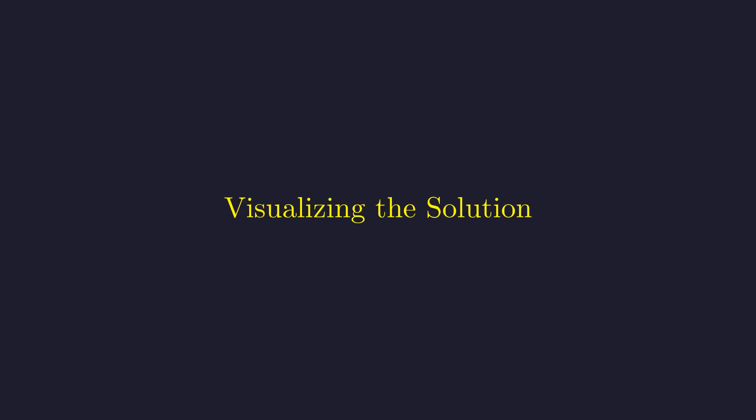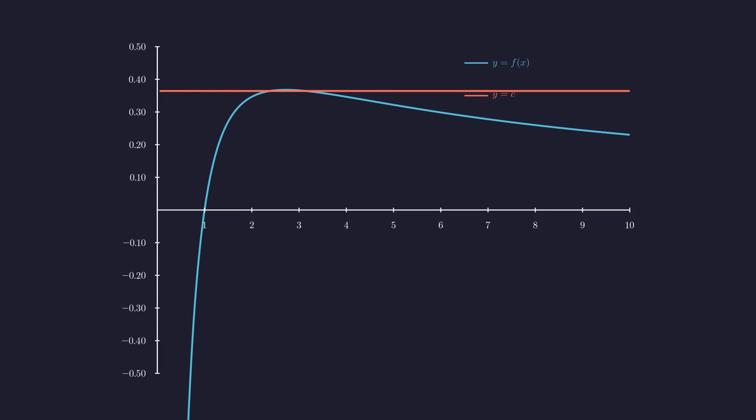Let me show you what this looks like graphically because I think a visual will really drive the point home. Let's plot our function f of x. Here's the blue curve representing f of x, and the red horizontal line representing our constant c. You can see the peak occurs at x equals e, and there are exactly two points where the red line intersects the blue curve. One is our obvious solution at x equals pi, and the other is this mysterious second solution that we're trying to find.